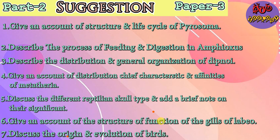Students, first of all, BSc Part 2, Munger University Paper 3. I will discuss Paper 3. Expected question number 1: Give an account of the structure and life cycle of pyrrhizoma. Those who have remembered pyrrhizoma and studied it — it is a very easy question and you are going to do it very well.